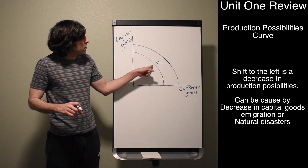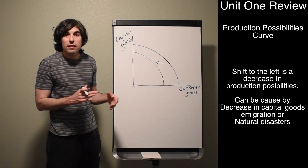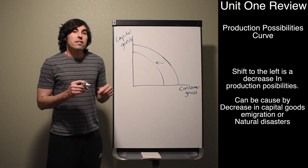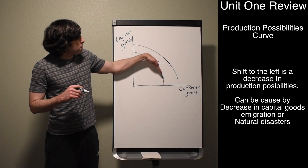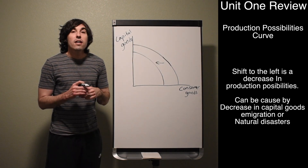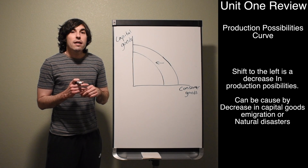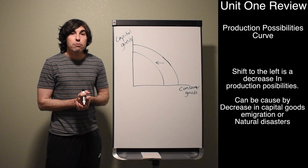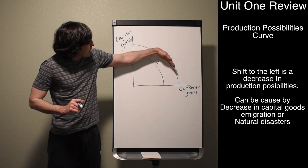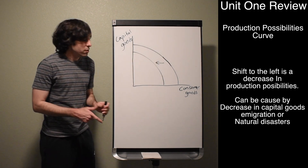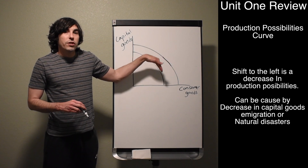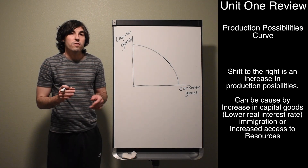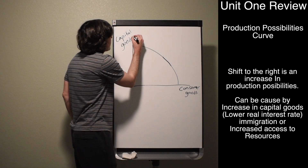Given the same amount of resources or labor, even at the natural rate of unemployment, we can't make as much stuff as before. On the AP test, if you see a question where you have to shift the curve to the left, it's usually caused by a reduction in capital goods — maybe depreciation, or the interest rate is too high and businesses are not buying capital goods. Fewer capital goods means less production in the future, which represents a decrease in economic growth.